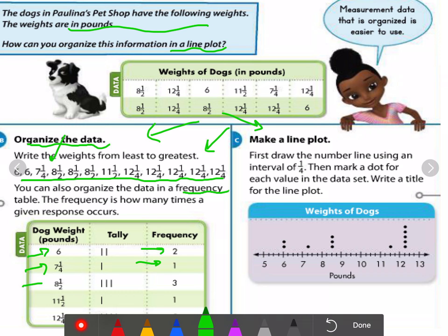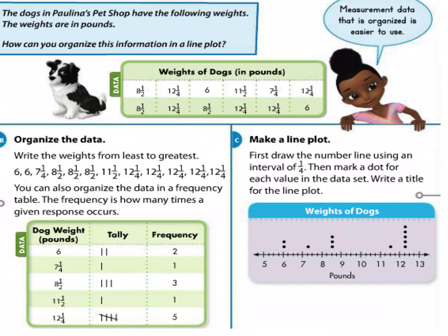For 8 and a half, how many values do we have? We have three, so the frequency is 3. It means how many times that value occurs. The next one is 11 and a half with a frequency of 1, and the last one is 12 and one-quarter with a frequency of 5.